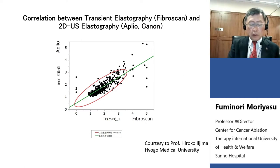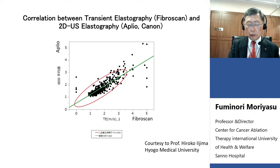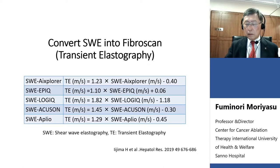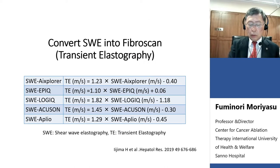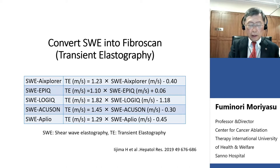This graph indicates the correlation between transient elastography and 2D elastography. Good correlation between the two methods is demonstrated. This is the converted correlation between 2D ultrasound versus FibroScan. A 10 to 15% increase is seen in FibroScan values compared to 2D elastography, but a very good correlation is seen.